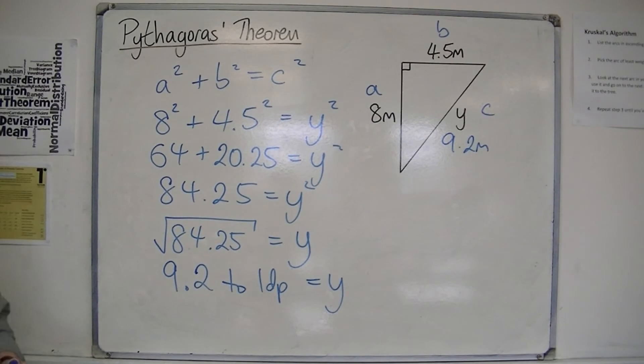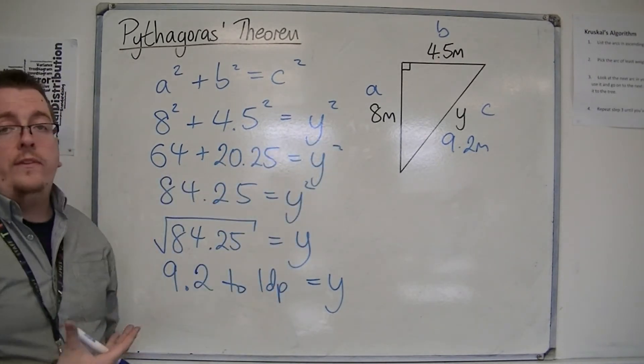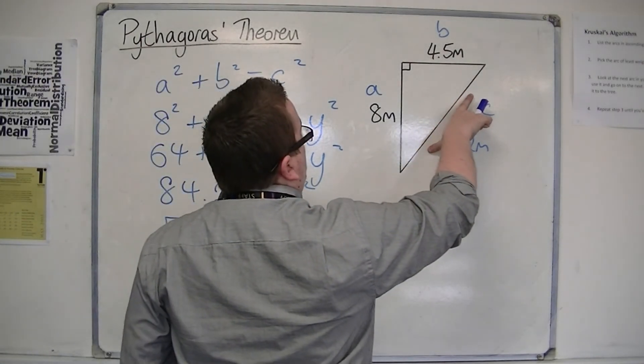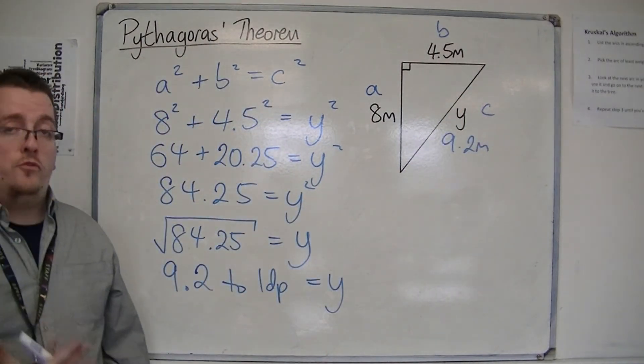Recognize that y, the hypotenuse, is always the longest length. The hypotenuse, opposite the right angle, is always the longest of the three sides.